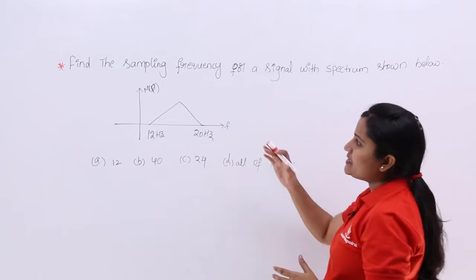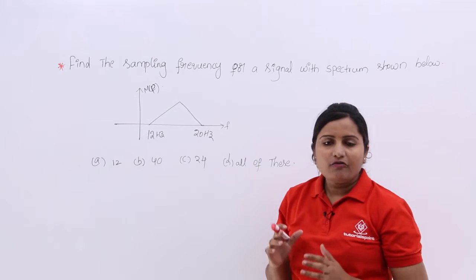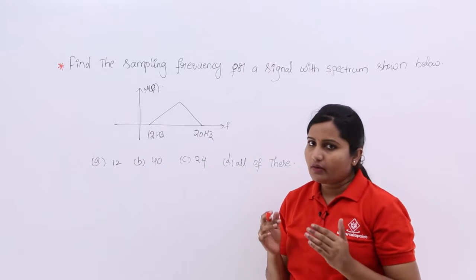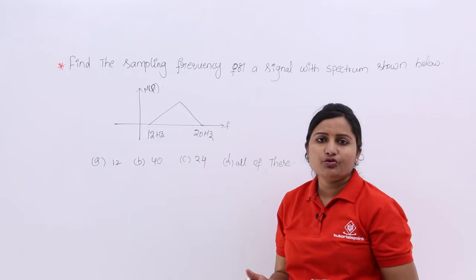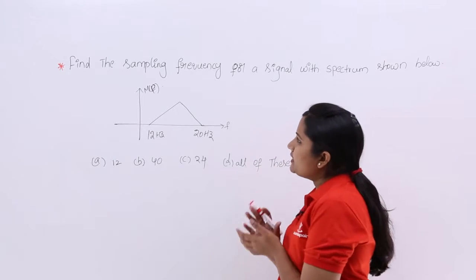They have given a signal spectrum. If a signal is there with this type of spectrum, for that signal what sampling frequency do we need to consider to reconstruct our message signal back perfectly. That's what they are asking.